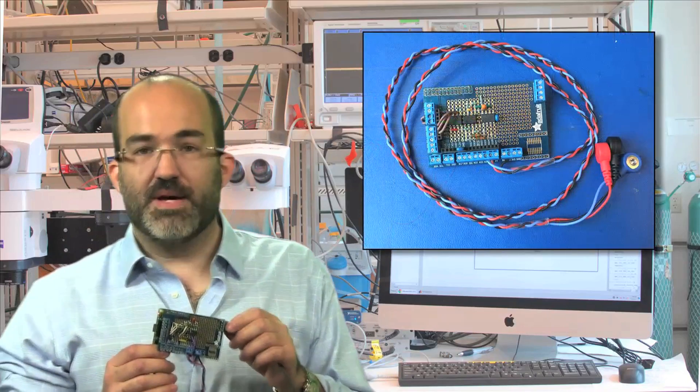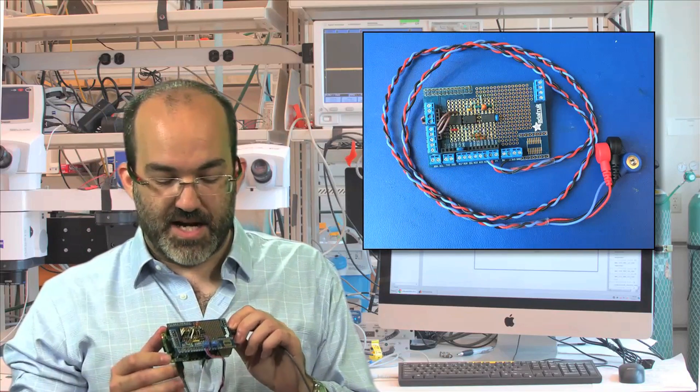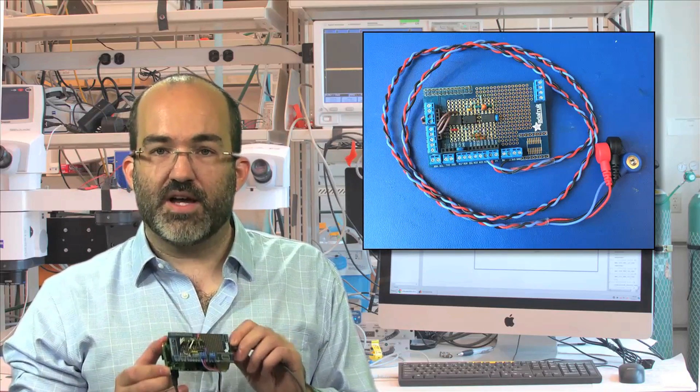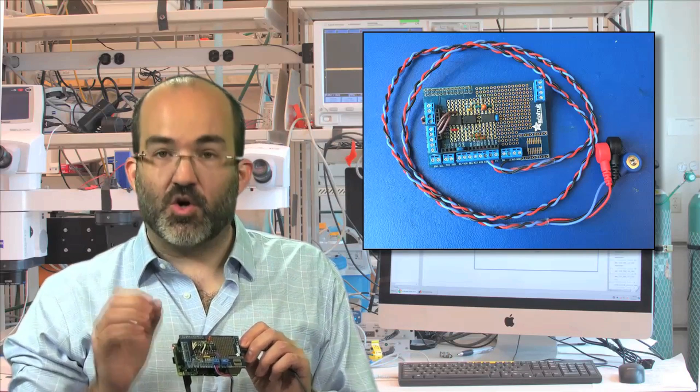And so the culmination of the course really is that you're going to build this device. This is a Raspberry Pi based device that you're going to design and build an analog front end for. That's a circuit that will record an electrical signal from your body. It will transmit it wirelessly to the computer, your laptop, after it's amplified and digitized, and you'll learn how to do all of that.